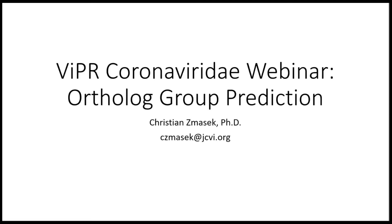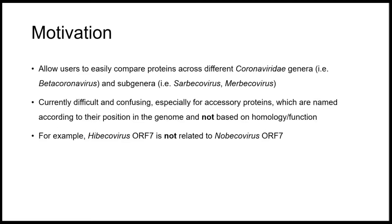Today's presentation is a little bit different from the workshops you've had before for two reasons. First, it's a bit more theoretical because people may not be familiar with this topic. Also it will be different because the actual data is not really in VIPER yet in a useful form. Anyway, let's start with the motivation: the goal is to allow comparison of proteins across different Coronaviridae genera, for example comparing beta coronaviruses with alpha coronaviruses, or even among subgenera like Sarbecovirus or Merbecovirus.